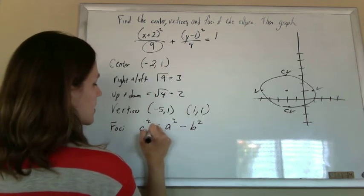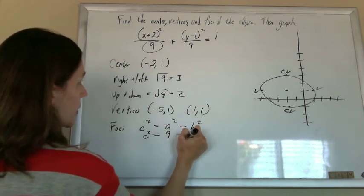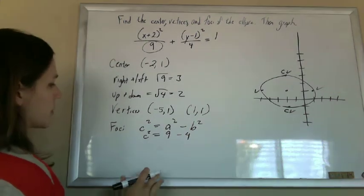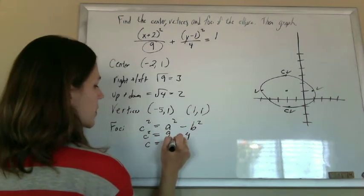So you do 9, c squared is going to be 9 minus 4. And you just always take the bigger minus the smaller. There are no imaginary numbers here. So c is going to be the square root of 5.